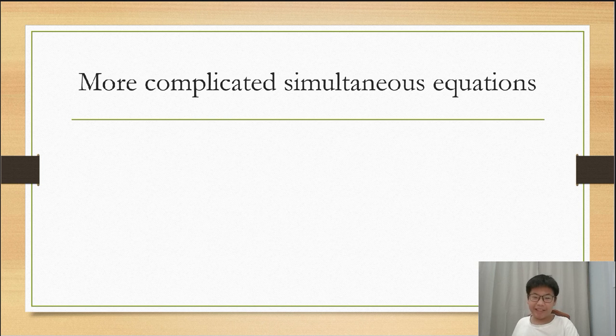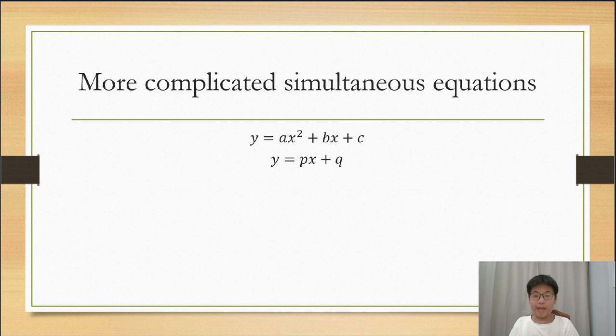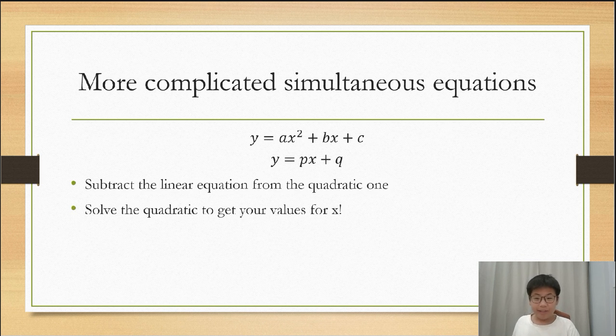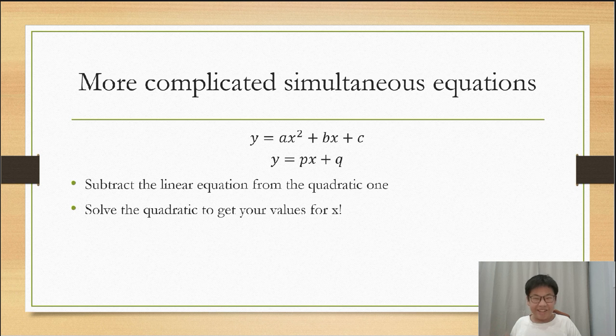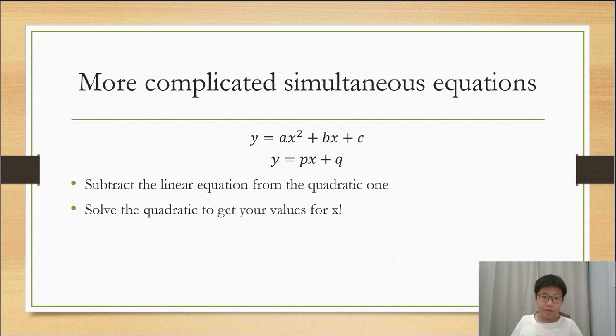What about more complicated simultaneous equations? Let the equations be y equals ax² plus bx plus c and y equals px plus q. Subtract the linear equation from the quadratic one and solve the quadratic you have to get your values for x. And once again, you will substitute in to get y. And if you use the discriminant again, you will see why some simultaneous equations have no solutions.